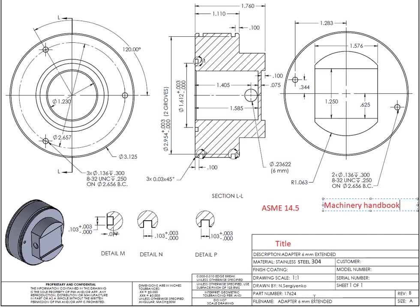Every part has a number in the design library. You will also see a very interesting part called 'Sheet 1 of 1.' If it says 'Sheet 1 of 2,' it means there is another sheet and not all the information is on this drawing. If you can't find or calculate some information, you have to look at that line — it will tell you if some information is located somewhere else. Generally, before you start reading the actual drawing, you have to read the template first — it gives you all the general information, and the drawing gives you more specific information.